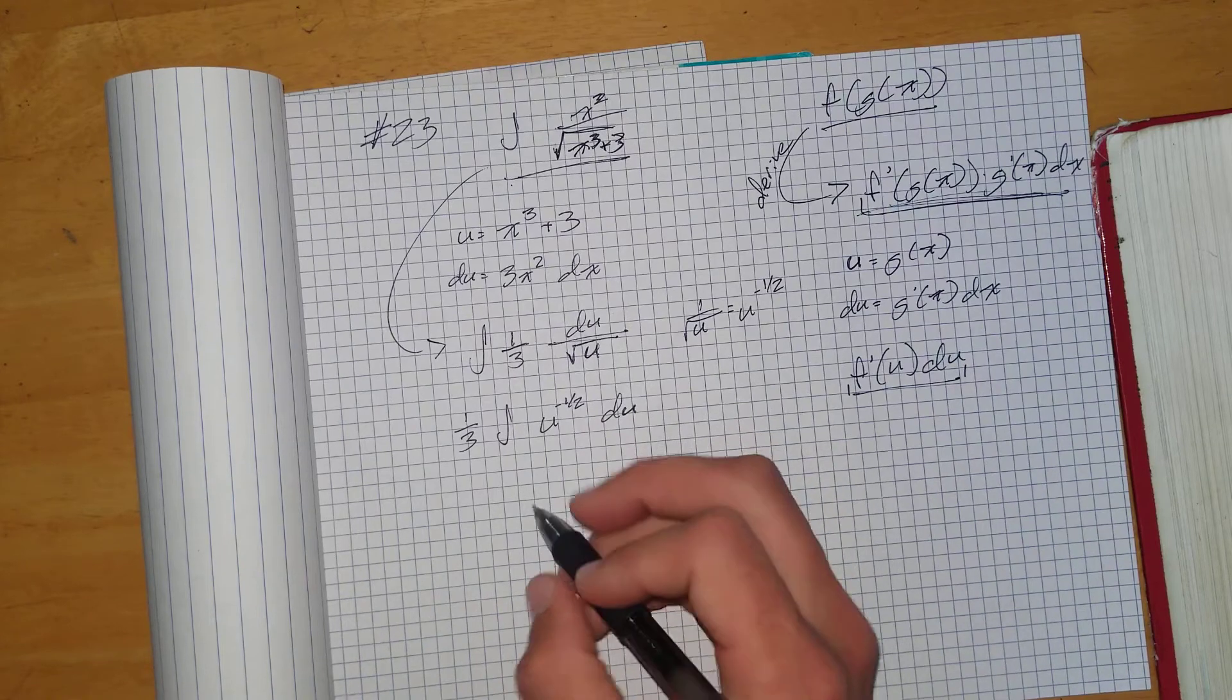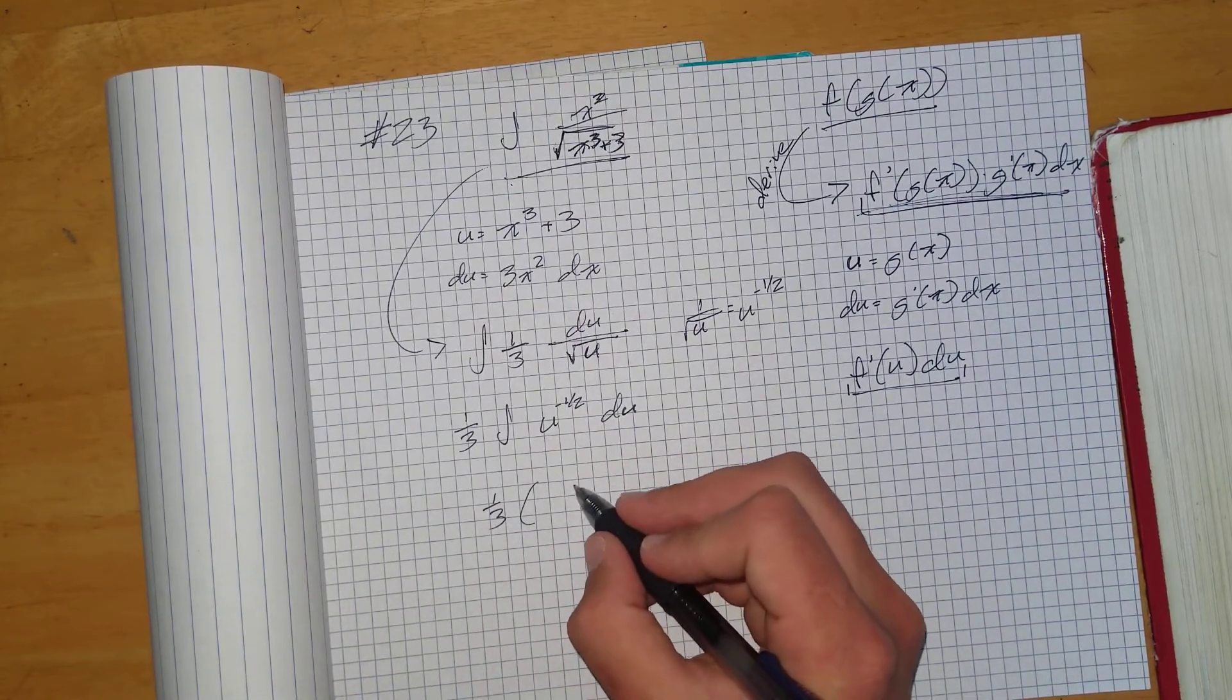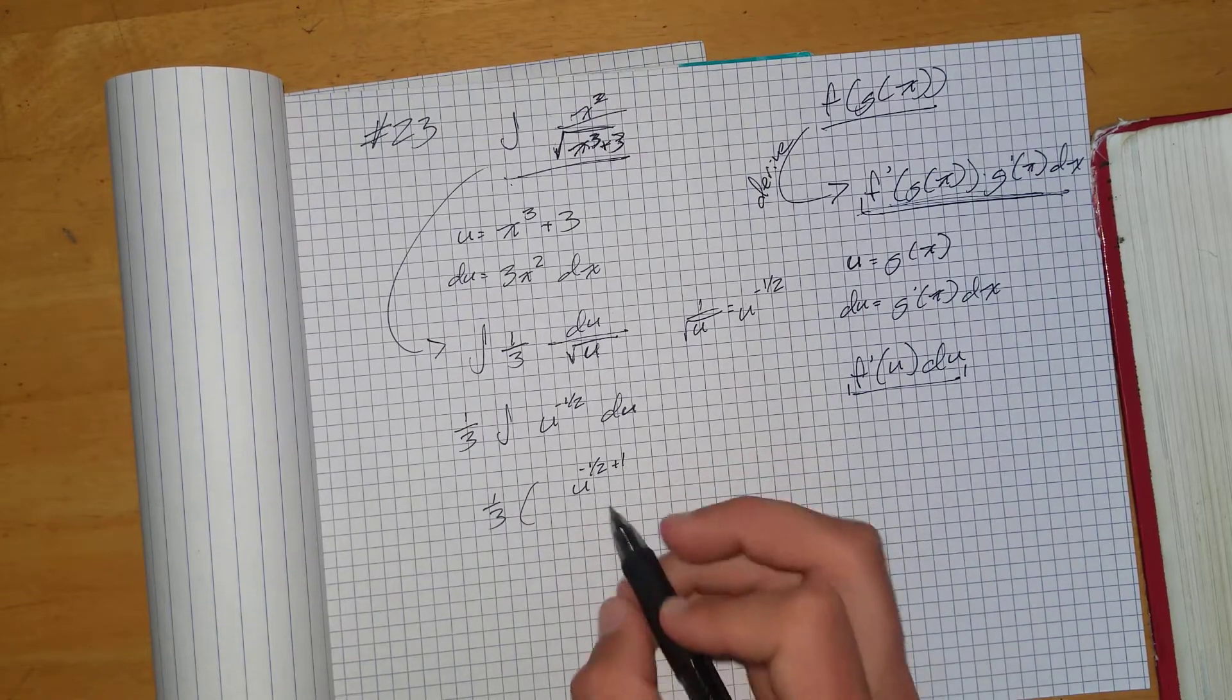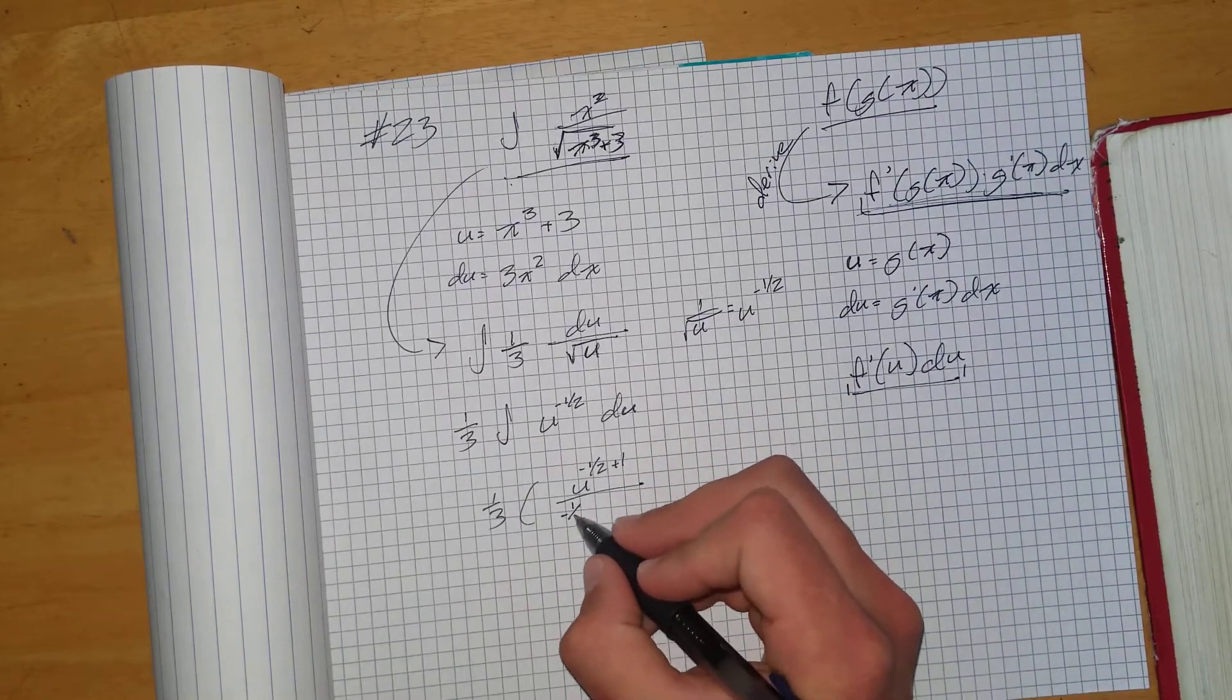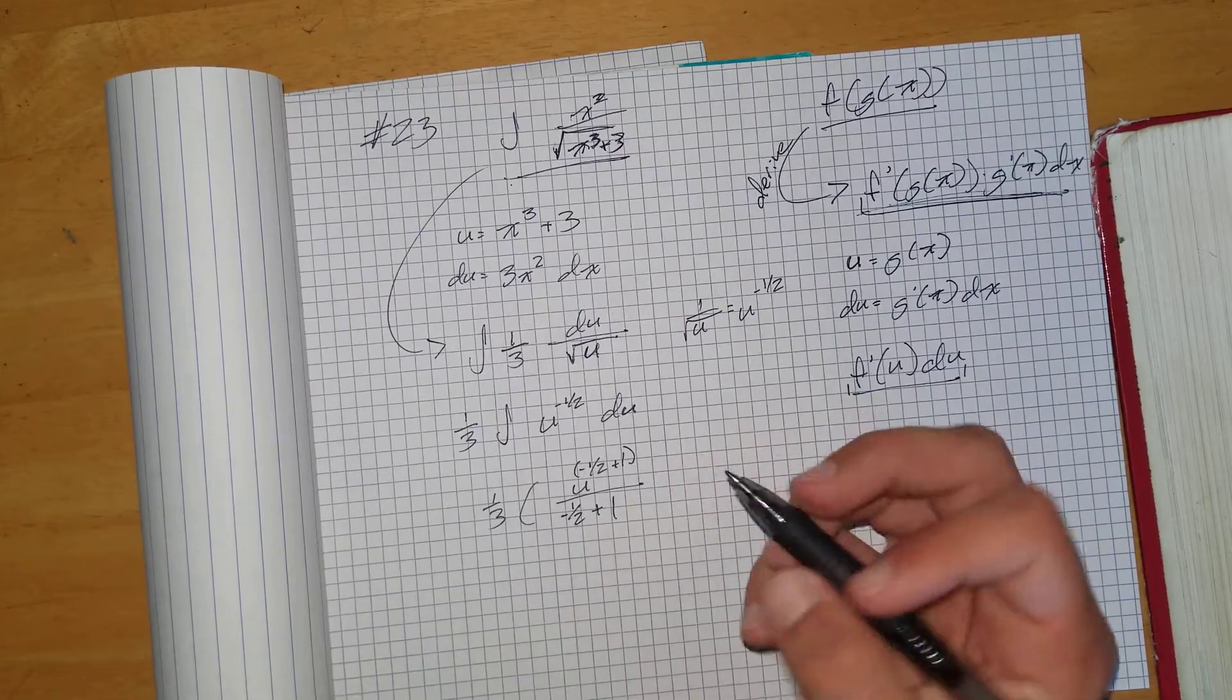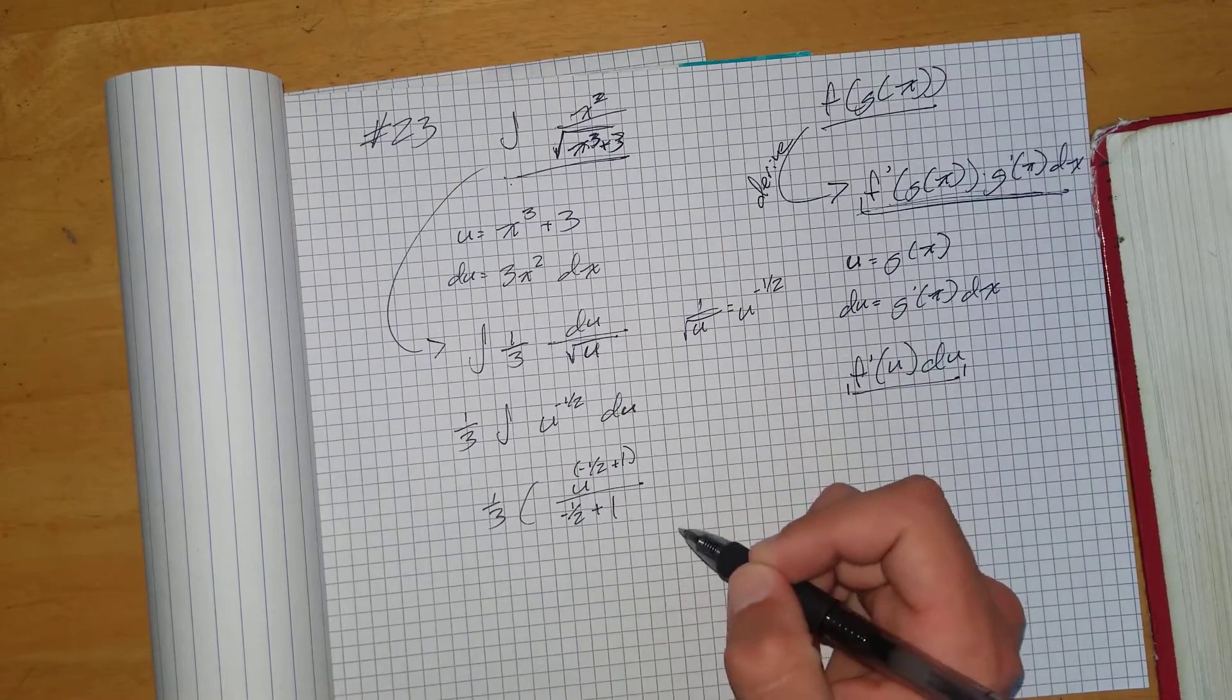So again, integrating this, 1 third times u, negative 1 half plus 1 because it's the opposite of deriving. So we're adding 1 instead of subtracting 1. And then we have to divide by what's in the exponent spot to compensate for bringing that down when we derive. And then this is all plus c.